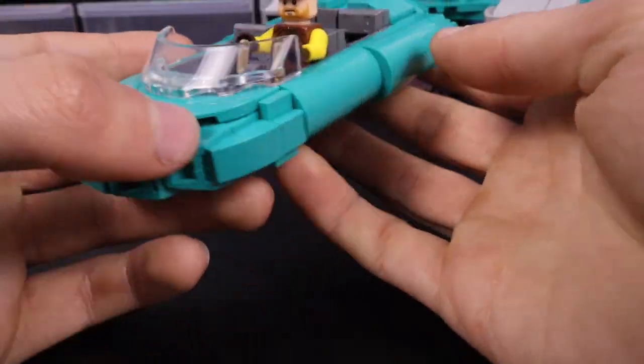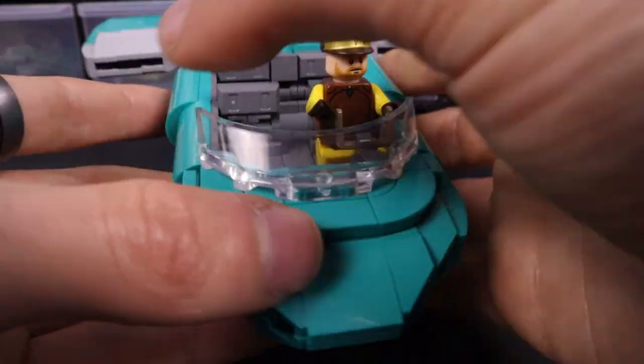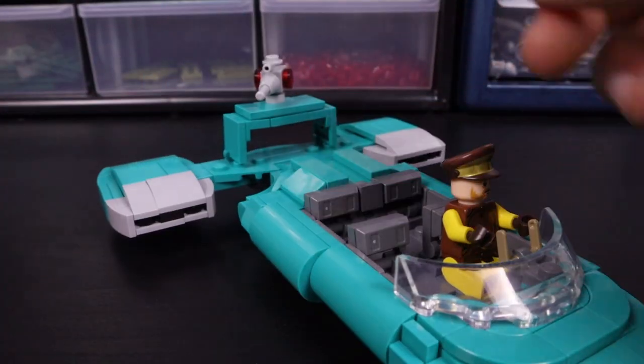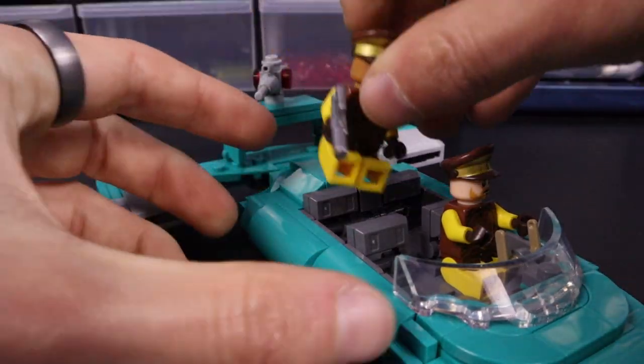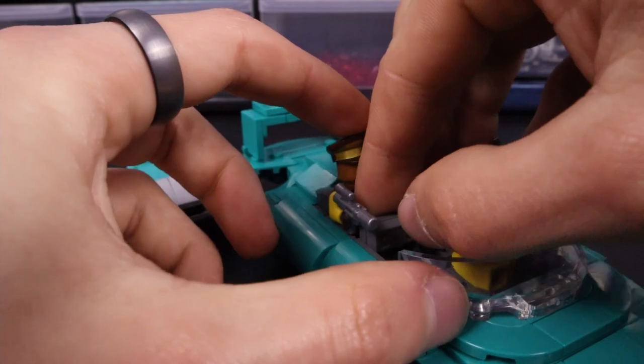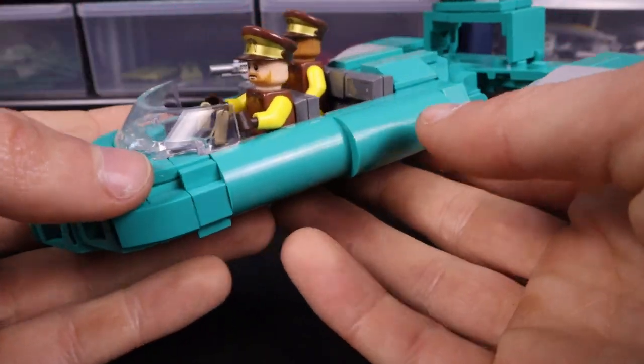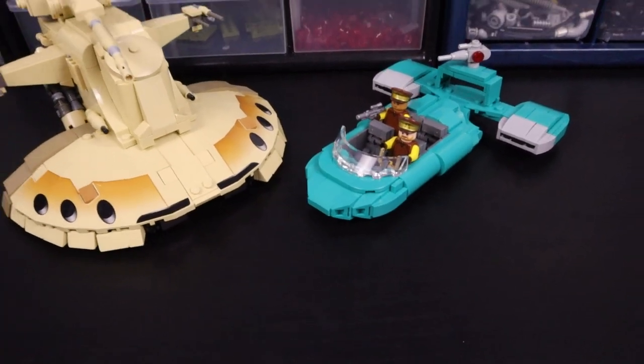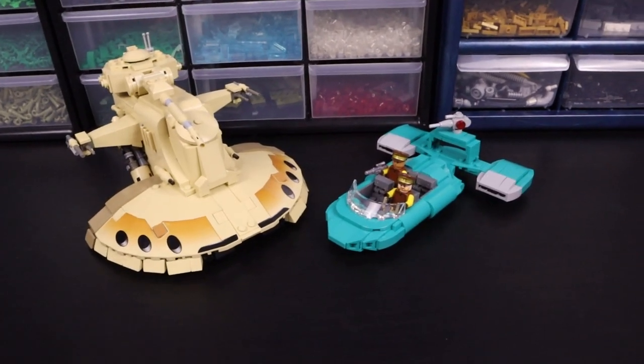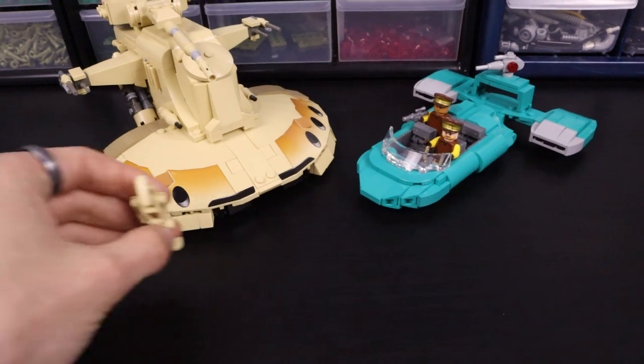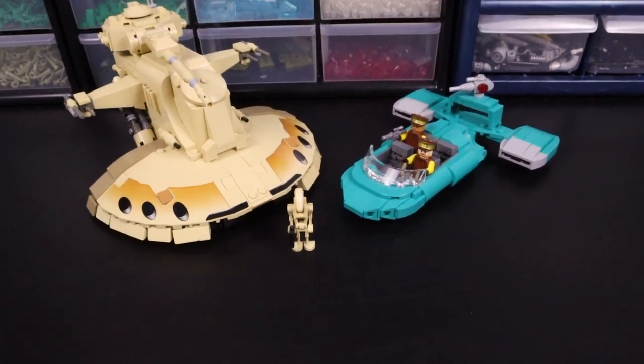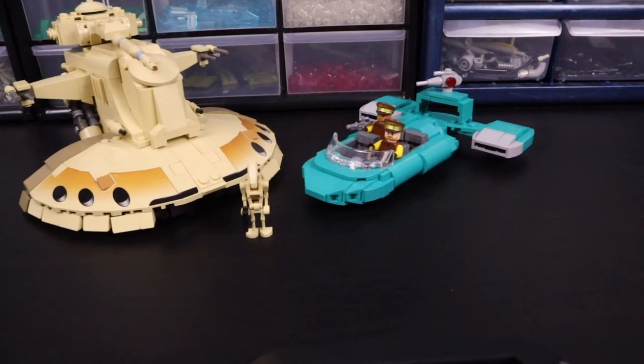And I do have a Naboo Security Guard that we can go ahead and put in the driver's seat. It's got plenty of room in there and I think it looks really nice. And then the back seats do function as well, so we can take another Security Guard and pop them in those. I can take this off of the stand and kind of show what they look like together. Here we have a Battle Droid just kind of standing in front of them for scaling, and I think that it really works well.